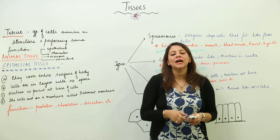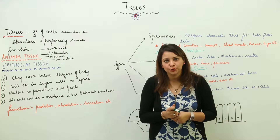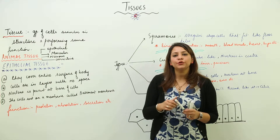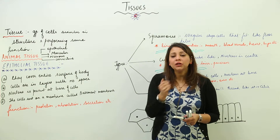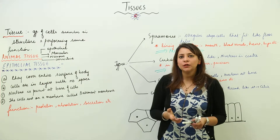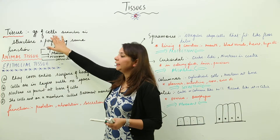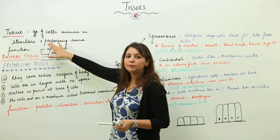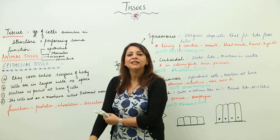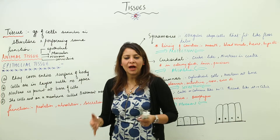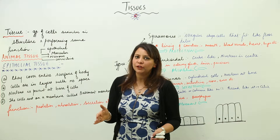We are going to start with a unit where we are going to study about tissues. As you know, tissues form the second lower level of organization. Tissues are formed by a group of cells that are similar in structure and they perform the same function.